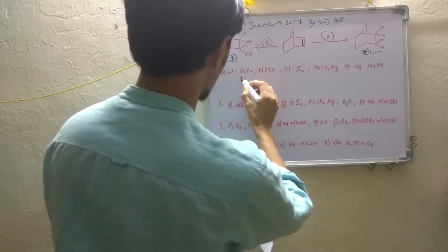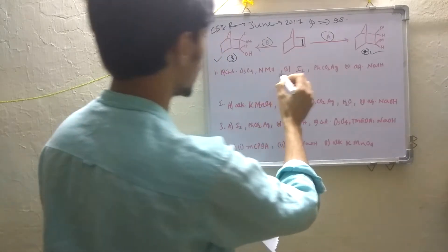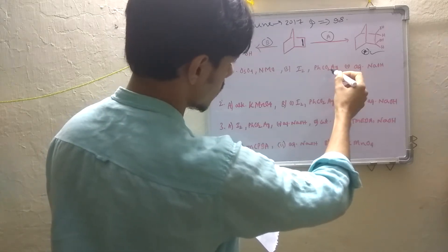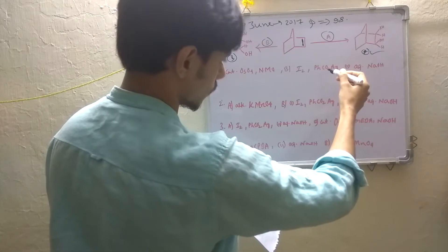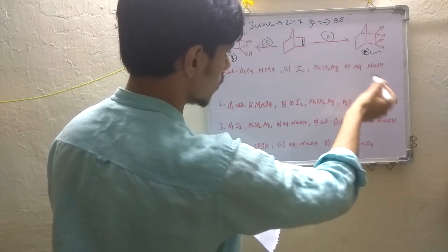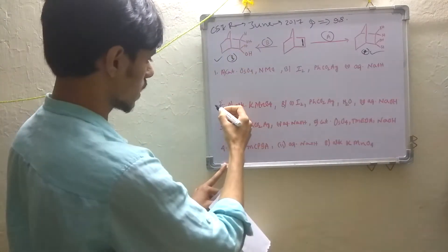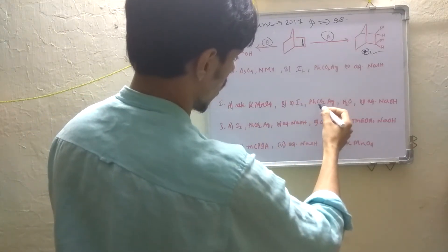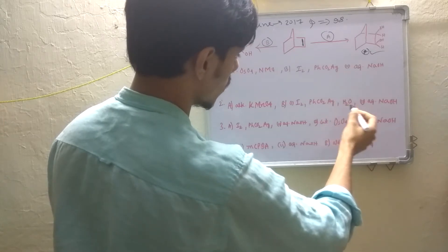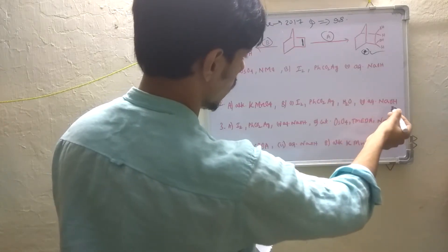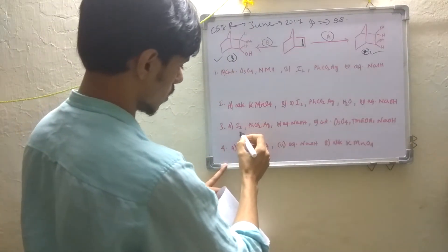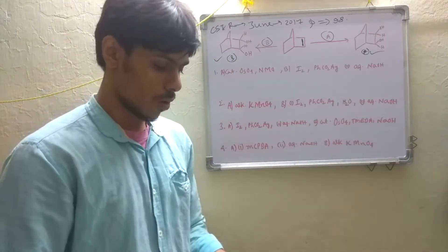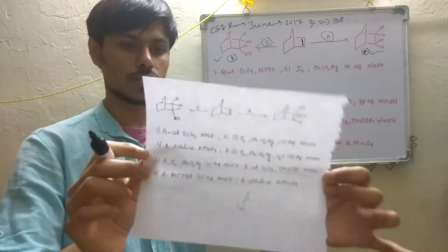The first condition given is catalytic osmium tetroxide and NMO for condition A. For condition B, it is I2 and PhCO2Ag (silver benzoate) followed by water and aqueous sodium hydroxide. A third option involves I2 as well. These are the options you can find in the question paper.